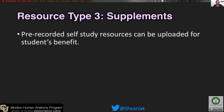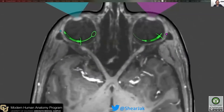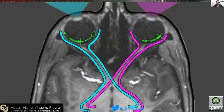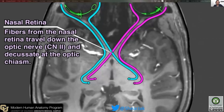The third resource type I'd like to talk about are supplemental materials. Two examples: I developed a pre-recorded self-study resource — a 10-minute asynchronous lecture on the visual system, uploaded for the students to review on their own. I also uploaded a 3D model to a program called Sketchfab, which allows the hosting and annotation of 3D models. I animated this in Maya to illustrate the pathways of visual information from the retina into the brain. Using After Effects, I was able to annotate the structures and give explanations for the content I wanted them to know.